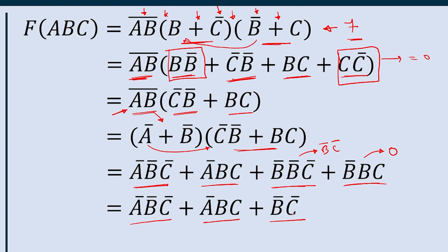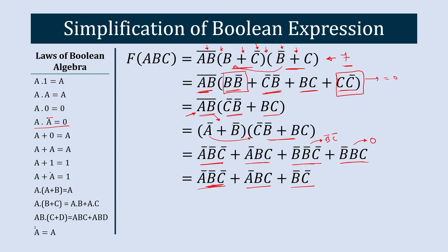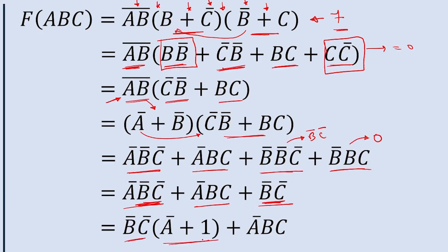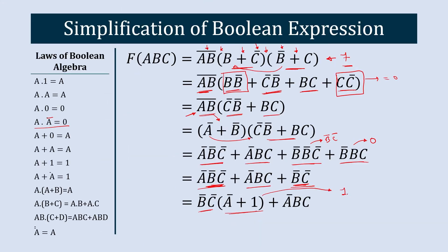We now have A-bar·B-bar·C-bar plus A-bar·BC plus B-bar·C-bar. Taking B-bar·C-bar common from the first and third terms gives B-bar·C-bar·(A-bar plus 1) plus A-bar·BC. Since A-bar plus 1 equals 1, this simplifies to B-bar·C-bar plus A-bar·BC. This is the simplified Boolean expression.